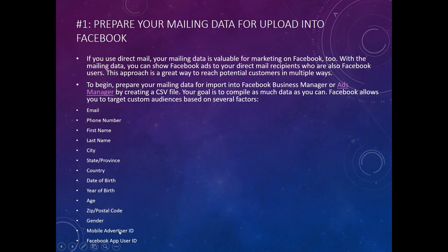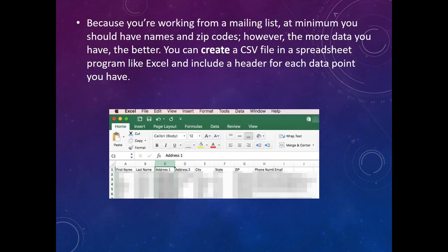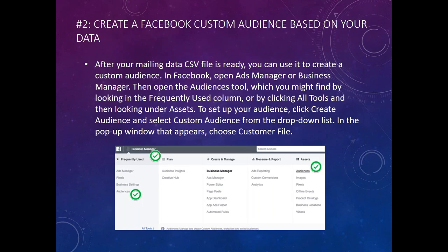You're probably not going to have some of this data, but be mindful of these 15 identifiers because whenever you buy or upload a list, this is the data Facebook can use — the more pieces you have, the easier it is to find those users. At a minimum from a mailing list you should have zip codes, names, and addresses. You can create the CSV file in a spreadsheet program like Excel or Google Sheets — just make sure you save it as a CSV.